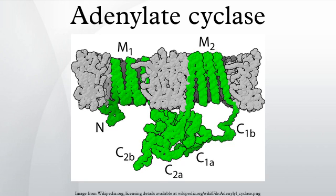Class I ACs occur in many bacteria including E. coli. This was the first class of AC to be characterized. It was observed that E. coli deprived of glucose produce cAMP that serves as an internal signal to activate expression of genes for importing and metabolizing other sugars. cAMP exerts this effect by binding the transcription factor CRP, also known as CAP.